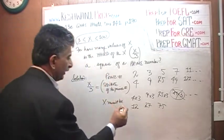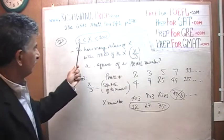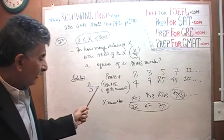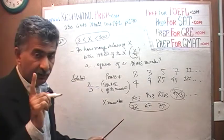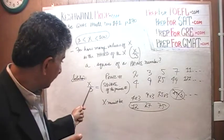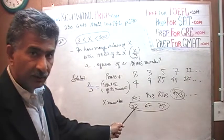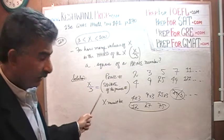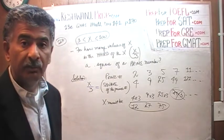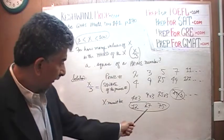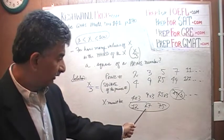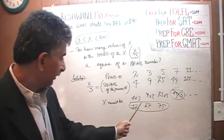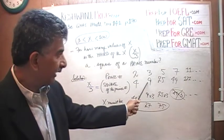We have to stay within the range between 3 and 100. How many numbers are such that if you take one-third of that number, it turns out to be a square of a prime? 12 is one such number — a third of 12 is 4, and 4 is a square of the prime 2. 27 is another: a third of 27 is 9, and 9 is a square of a prime number.